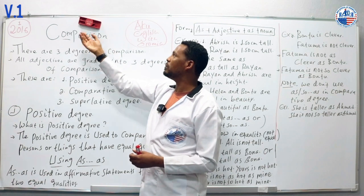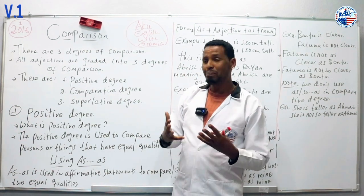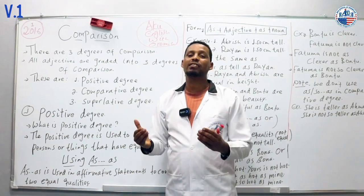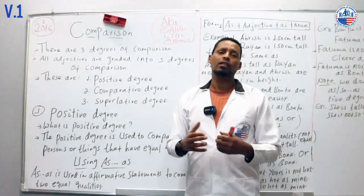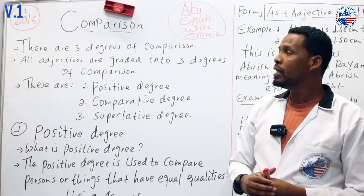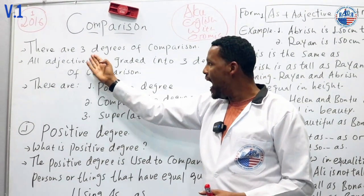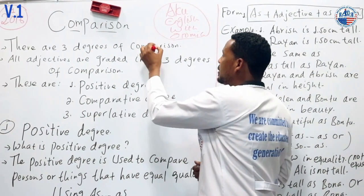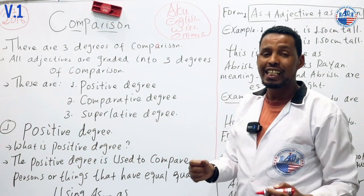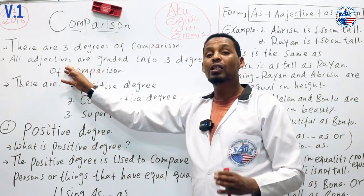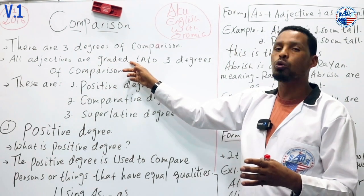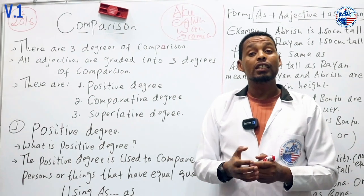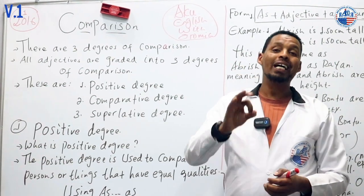Today's video topic is about comparison. What is comparison and how many comparisons or degrees are there in English language? In English language, there are three degrees of comparison, or all adjectives are graded into three degrees of comparison.